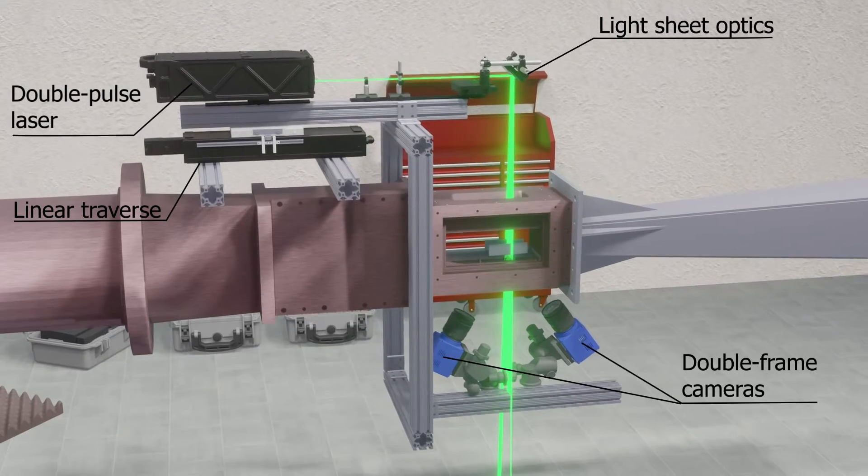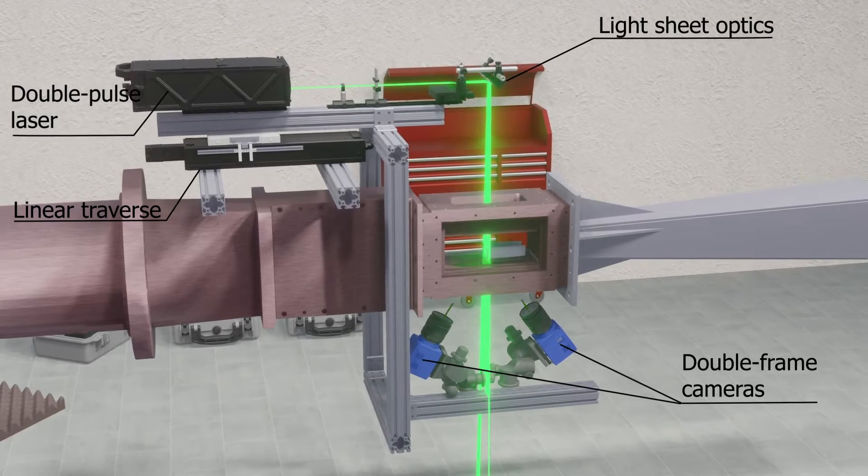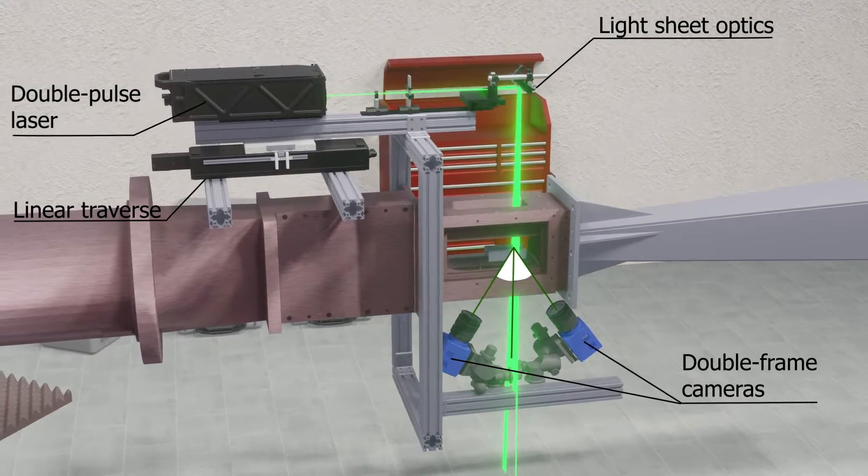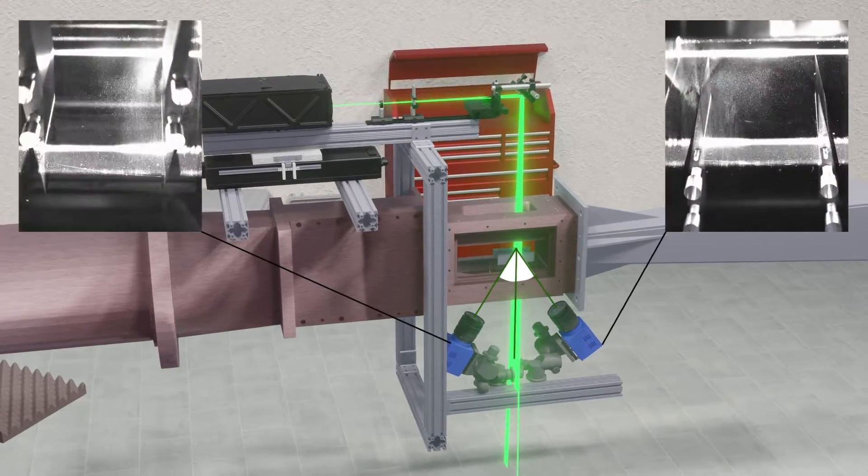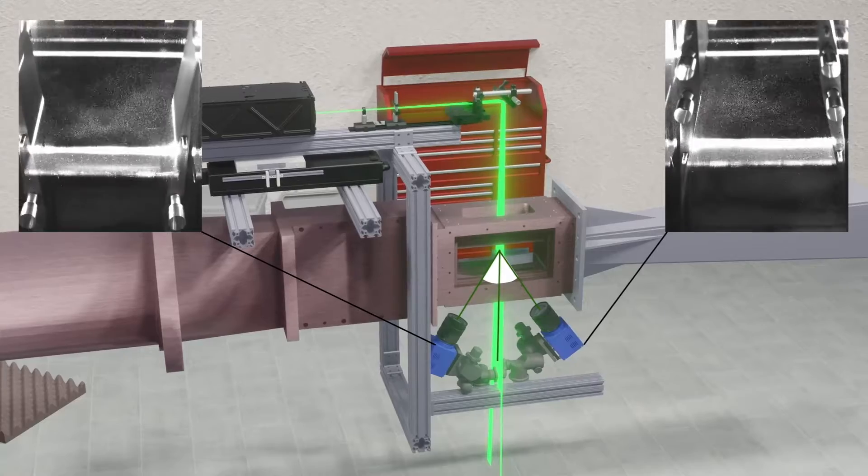Once we align and calibrate the cameras we can observe that the angles and distances between the camera and the laser sheet don't change. The image of the model as seen by each camera changes but the dewarping function at the illuminated plane is the same.